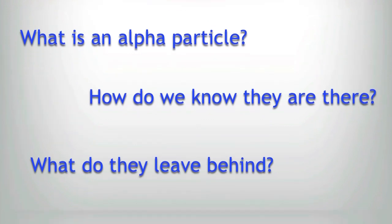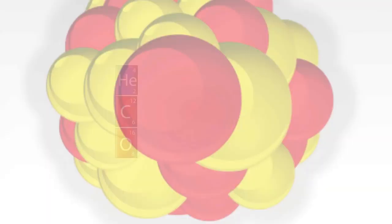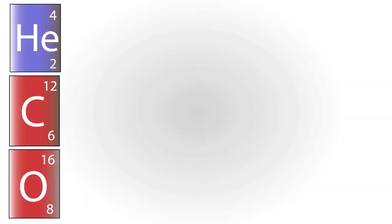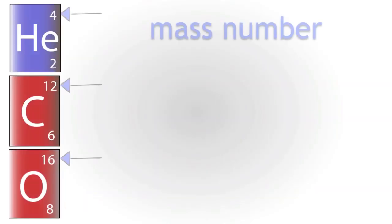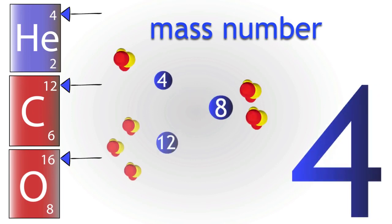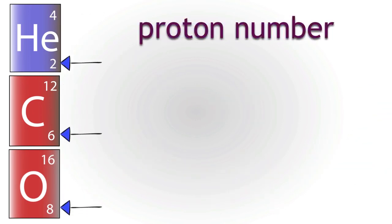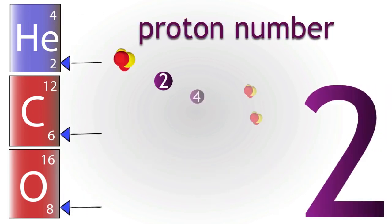Let's look at how to build a really big nucleus first. You may not know this, but most of the most common atoms have a mass number which is a multiple of four, and a proton number which is a multiple of two.